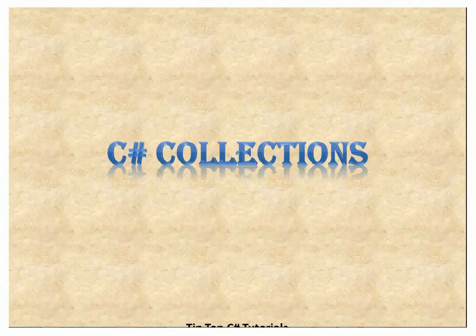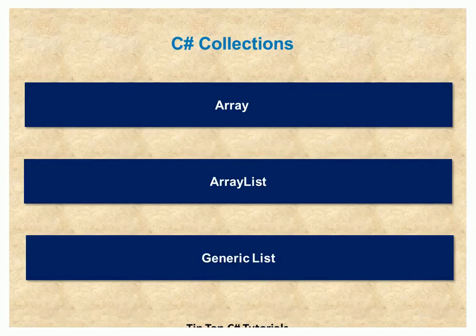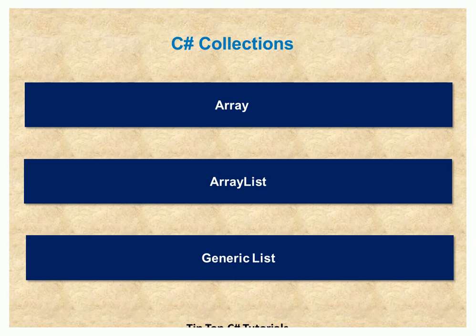Hello all, today we will cover the different basic types in C-Sharp programming language. This is by TipTop C-Sharp tutorial series. What are the basic types we are going to cover today? The first one will be array, the second one we will take a look at ArrayList, and finally we will take a look at generic list. Let's take a brief look at each of these collection types one by one.